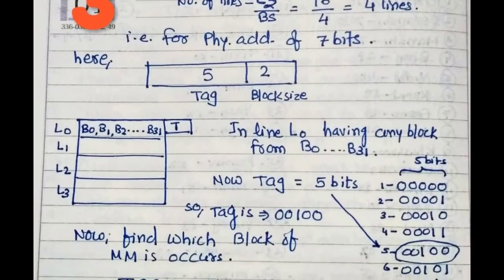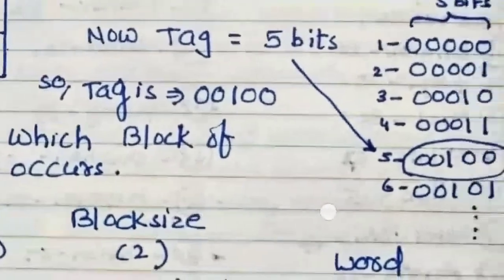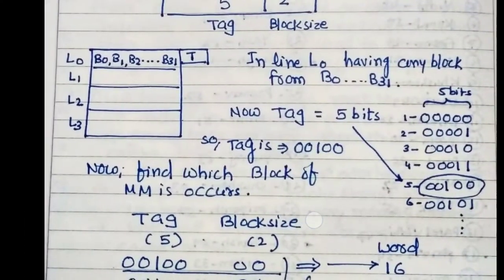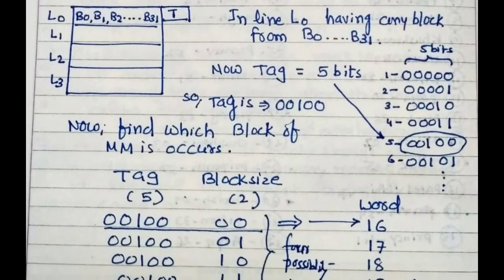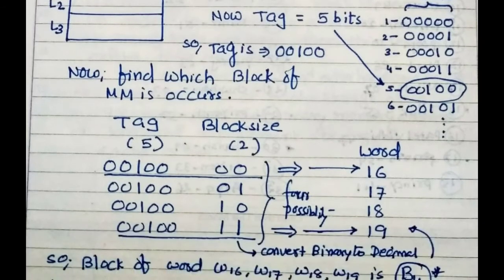Here the tag is 5 bits. The 5 bit tag ranges from 00000 to this. Suppose the tag is 00100. We want to find which block can be stored here, or which block of main memory occurs. So tag is 5 bits. Four possibilities occur because the block size is 2 bits. That's why 2^2 means 4 possibilities.